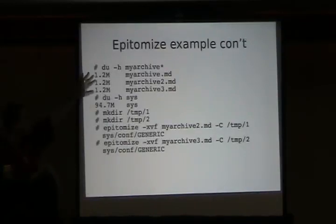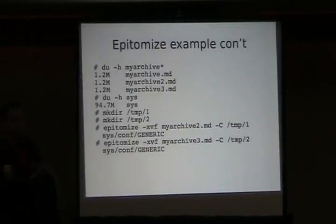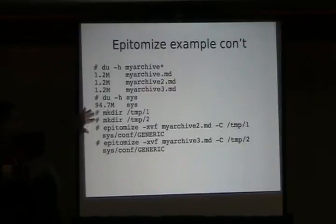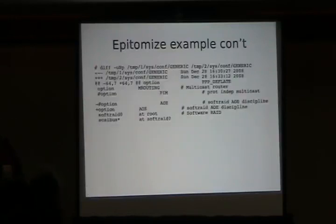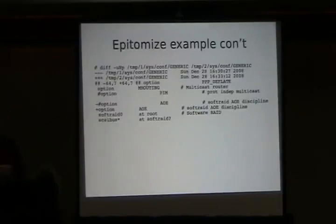I wanted to show you guys how big it is. The metadata files were about 1.2 megabytes after I created them. I go through some commands just to show you how that would work. I created a few temporary directories and uncompressed the same file that I changed earlier. I ran a diff on it — that was basically the change that I made. You can see again the snapshotting action.